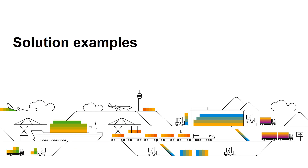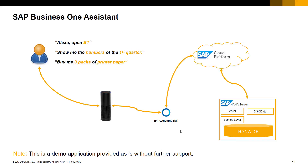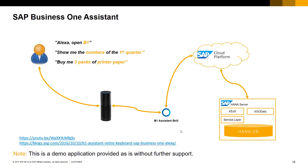Let's have a look at some solutions built on top of the SAP Business One Service Layer. The SAP Business One Assistant solution shows the Amazon Alexa device making voice-activated requests to SAP Business One. Based on the requests received, data will be retrieved and transactions will be posted to SAP Business One via Service Layer. For example, when we say 'Buy me three packs of printer paper' to Alexa, a new sales order will be created automatically in Business One via the Service Layer. Please note that this is a demo solution provided as-is without further support. For more details, please check the SAP Community blog provided on this page.